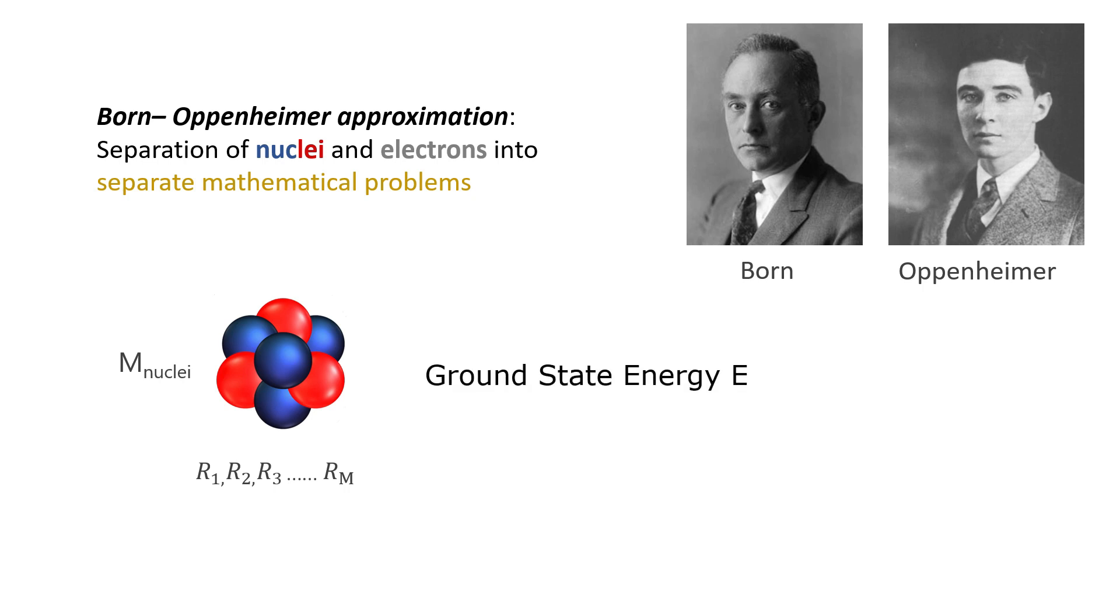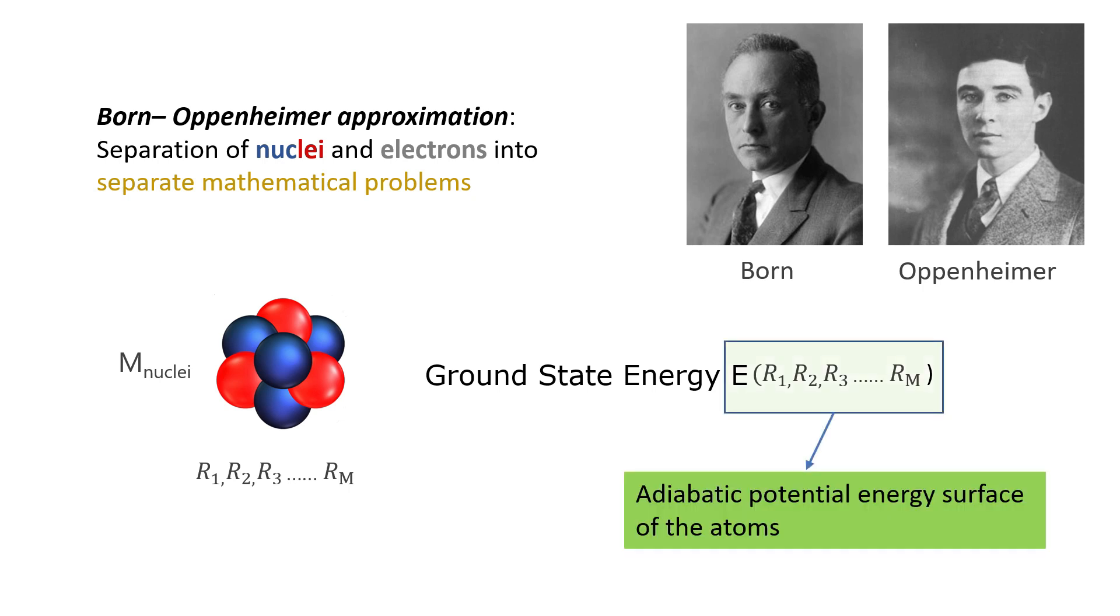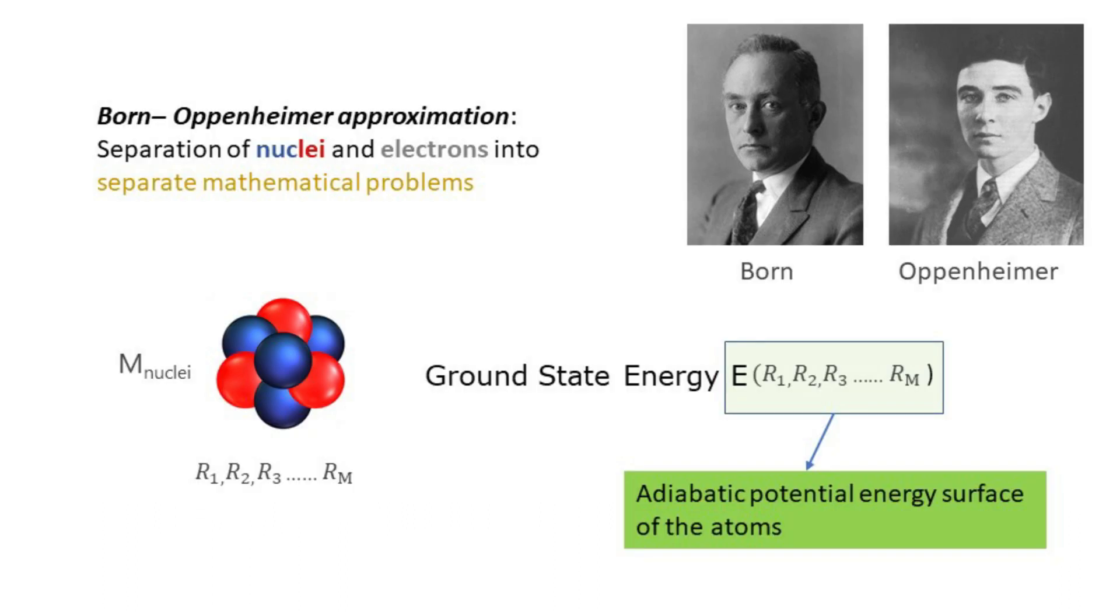This function is known as the adiabatic potential energy surface of the atoms. Since we are able to calculate this potential energy surface, now we can tackle the original problem that we discussed in the starting part of this video.